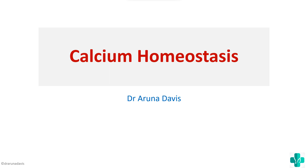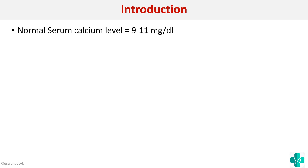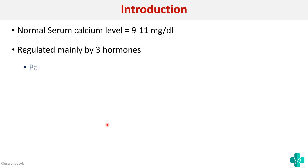In this video we're going to see about calcium homeostasis. When such a question is asked you should always start your answer with the normal value of calcium. The normal serum calcium level is 9 to 11 milligram per deciliter. Calcium is mainly regulated by three hormones: parathyroid hormone, vitamin D, and calcitonin.